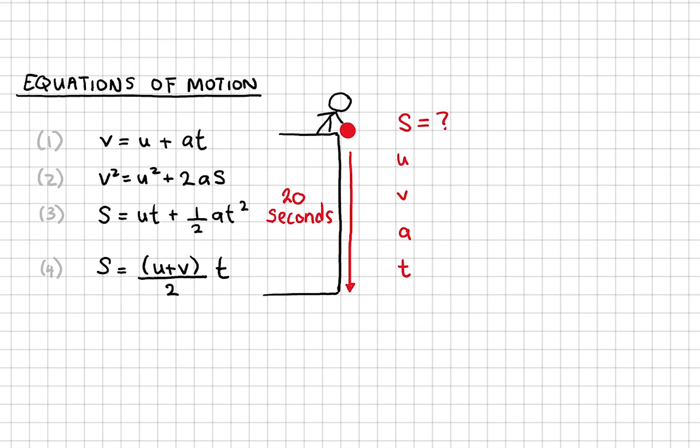S is what I'm trying to find, so here's the question mark. The ball was initially in my hand at rest, so it had a velocity of 0. I don't know the final velocity of the ball, but I know acceleration due to gravity is always 9.8 meters per second squared on Earth. And the question tells us time is 20 seconds.